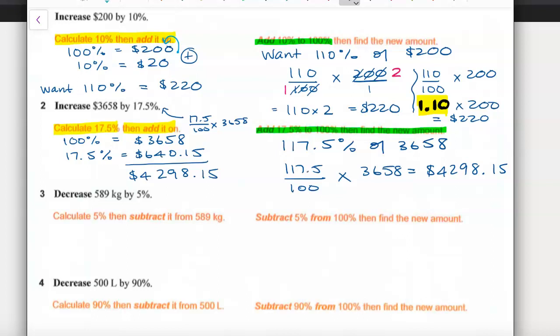So you may choose whatever method, method 1 or 2, that works for you. We can use these same methods if we actually want to decrease an amount by a particular percentage. We simply find that percentage of the amount and then subtract it from its total.